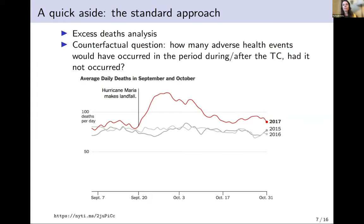As a quick aside, the standard way of estimating health impacts of extreme weather events is the excess deaths analysis. In its simplest form, you estimate an expected number of deaths in the absence of the storm using data from the same period in previous years in the same place, and compare that to deaths actually observed during and after the storm exposure. Using this average from prior years answers the counterfactual question: how many deaths would have occurred during the storm period in the absence of the storm? The most notorious example is the high-profile analyses done for Hurricane Maria in Puerto Rico.